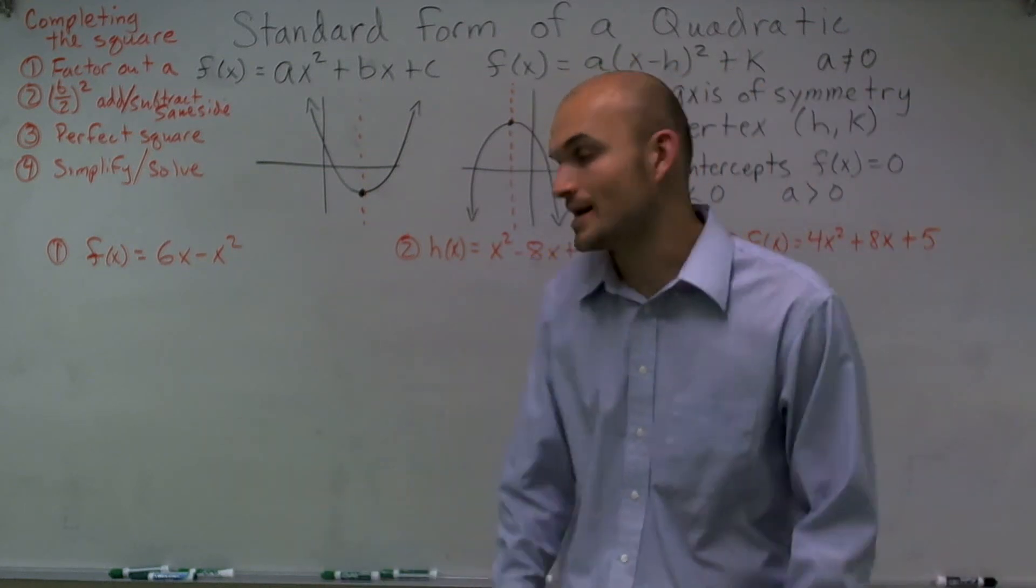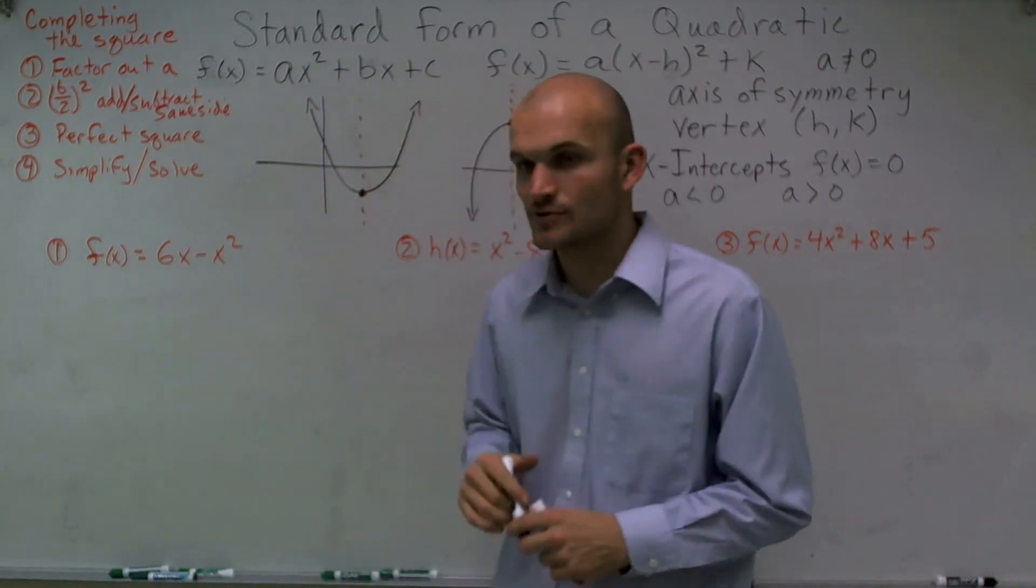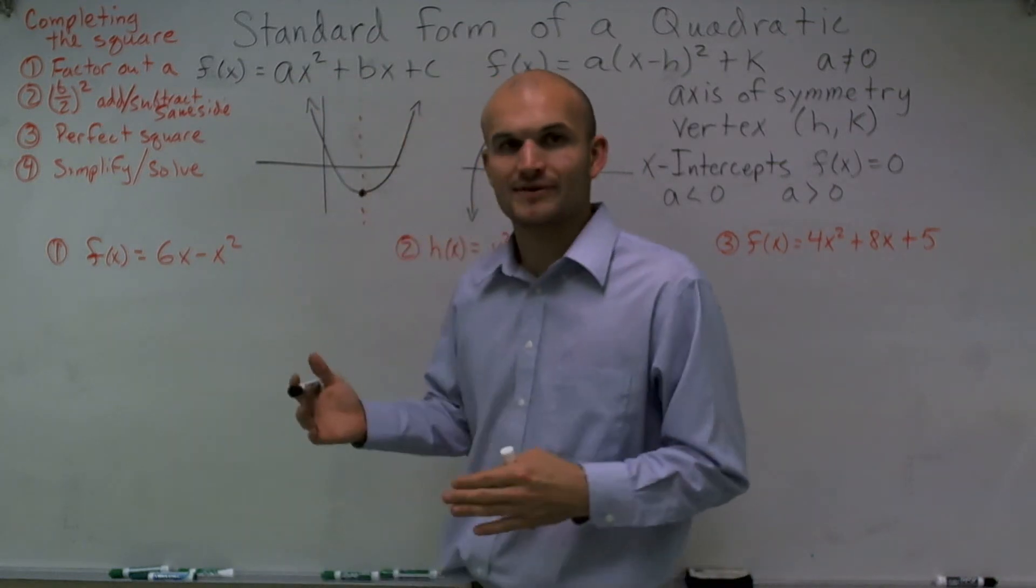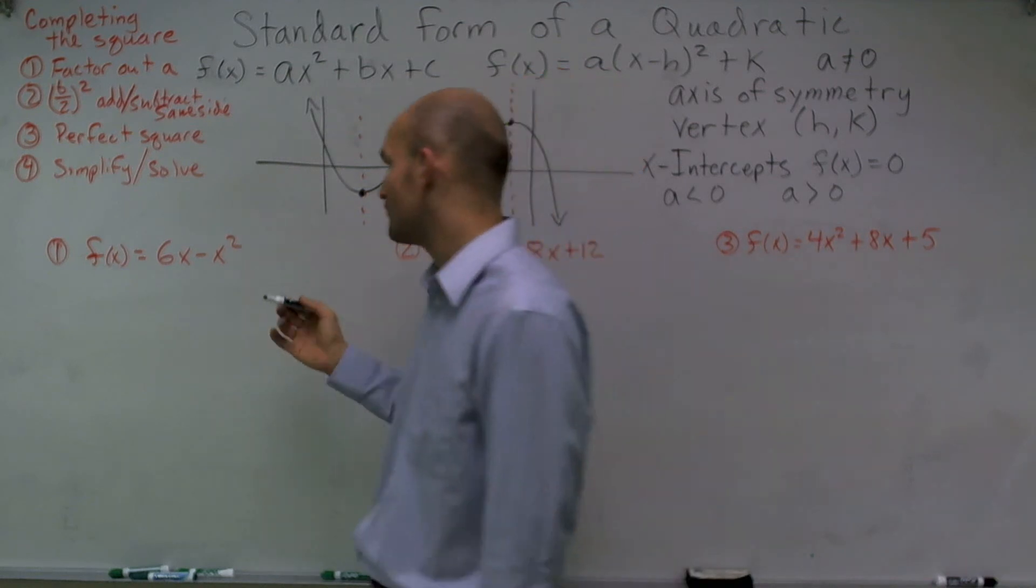All right, ready? Let's give it a shot. So on the first problem, we have f(x) = 6x - x². Real quick, if you guys notice, it's not in our standard form. So what we first want to make sure we do is put it into the standard form.